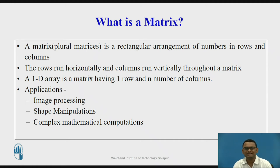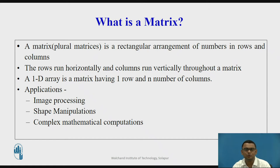So what exactly is a matrix? A matrix — the plural of which is matrices — is a regular arrangement of numbers in rows and column fashion. So if you are taking a set of numbers and arranging them in rows and columns, then we call that arrangement a matrix.